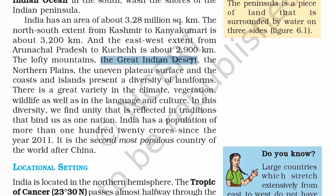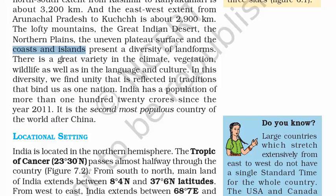We have the great Indian desert in Rajasthan, lofty mountains, the northern plains, the uneven plateau, coasts, and islands — all present in diversity of landform. We also have great variety in climate, vegetation, and wildlife, as well as in language and culture. Currently India has 22 official languages, 29 states, and 7 Union territories.